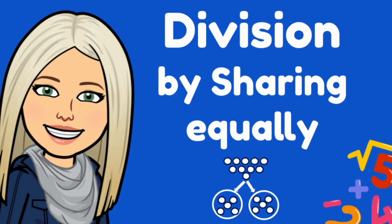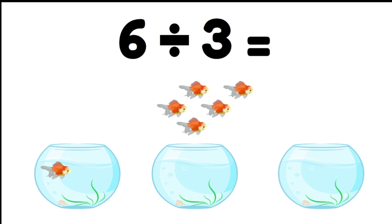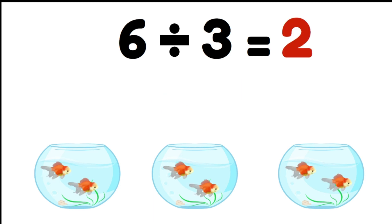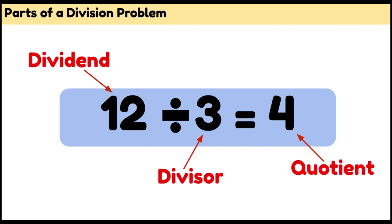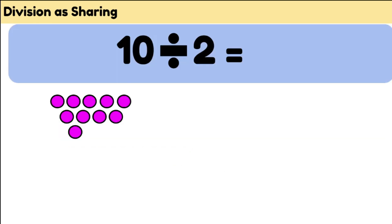Division by sharing equally. Division is the process of sharing a number into equal groups to work out how many groups or how many are in each group. Each part of a division problem has a different name. We start with a dividend, that's the total number you have. The divisor is what you're dividing by or how many groups. And the quotient is your answer or how many are in each group.